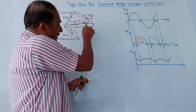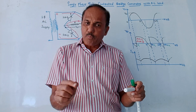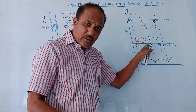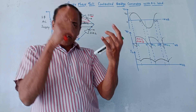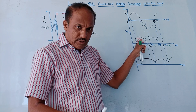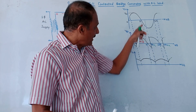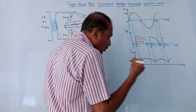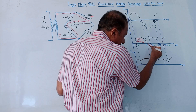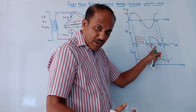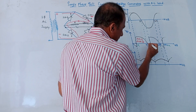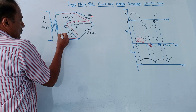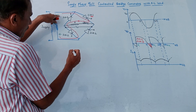An inductor has the property to oppose change in current. The inductor is a storage device: when SCR1 and SCR3 are in conduction mode, the inductor stores energy. When the cycle changes and the negative half cycle starts, the inductor returns the stored energy to the source. This conduction continues for a certain time period after π — specifically from π to π+α — until the inductor dissipates all stored energy and conduction of SCR1 and SCR3 stops.